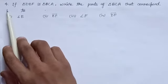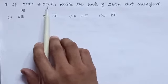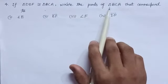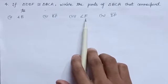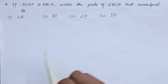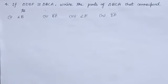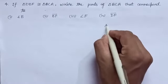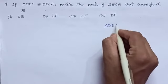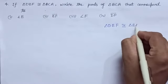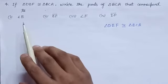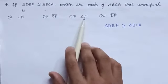The next question: if triangle DEF is congruent to triangle BCA, write the parts of triangle BCA that correspond to angle E, line segment EF, angle F, and line segment DF. I have already told you how to identify the corresponding pairs of vertices, angles, and sides when two congruent triangles are given. Here it is given that triangle DEF is congruent to triangle BCA, and we have to identify the corresponding parts to angle E, EF, angle F, and DF.